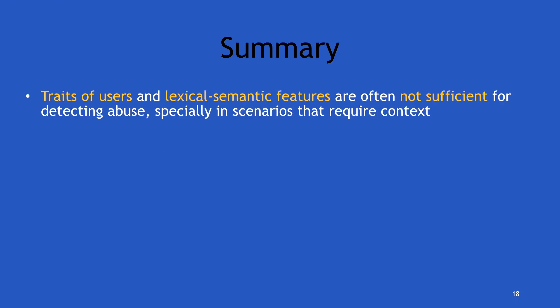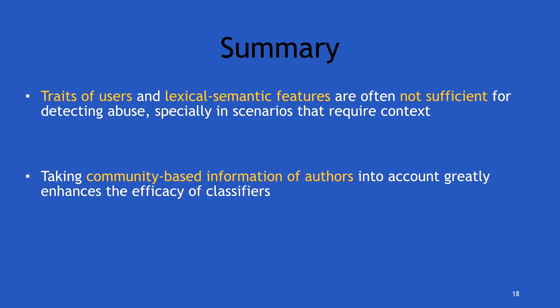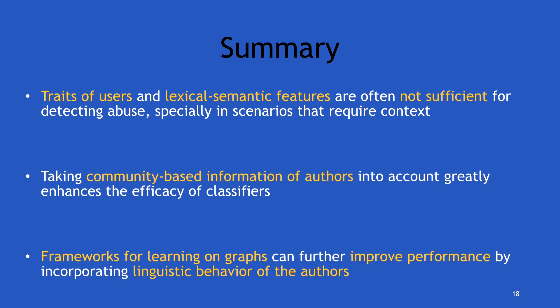In summary: traits of users and lexical semantic features are often good, but not enough to capture contextual information important for implicit abuse. Taking community-based information of authors into account really enhances performance, as shown in our previous work. Frameworks for graph learning can boost performance further by incorporating the linguistic behavior of authors in the graph. All the code for this work is public. Thank you.